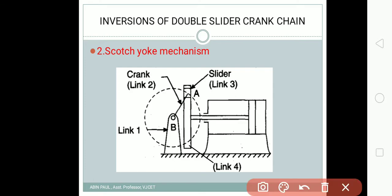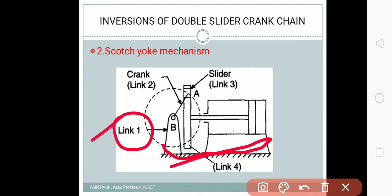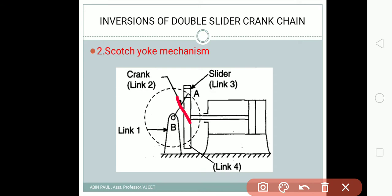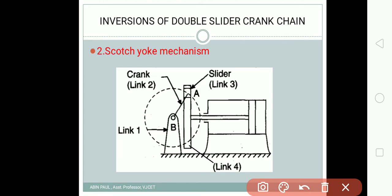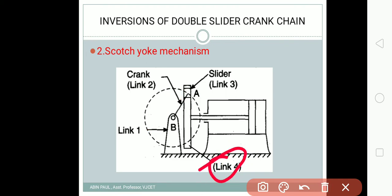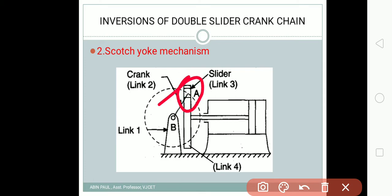This is the two-dimensional diagram of the Scotch yoke mechanism for your examinations. The entire frame is named link number one — it is the fixed link. Then we have the crank, which is link number two, generating a circular path. The third link is the first slider, and the fourth link is the second slider. So out of the four links, link number one is fixed and links three and four are the two sliders, making it a double slider crank mechanism.